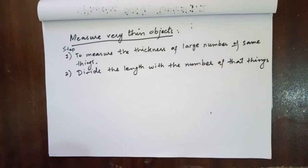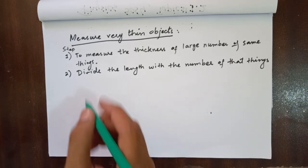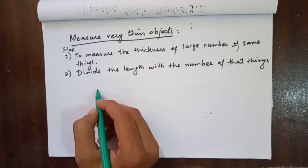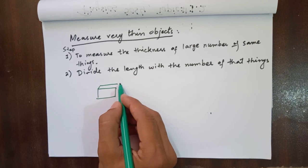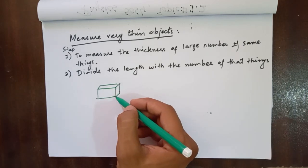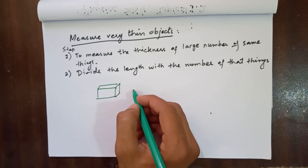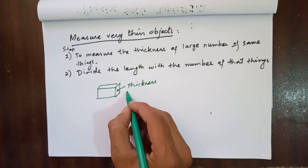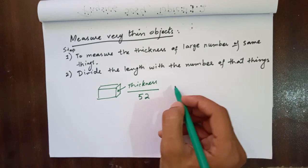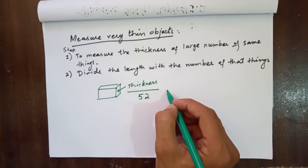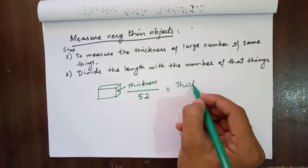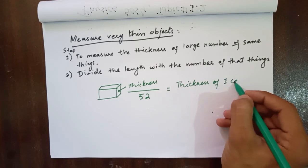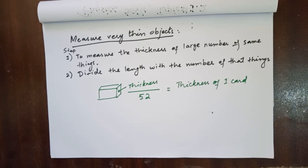For example, if we have to measure the thickness of one card from a pack of 52 cards, we will take the thickness of that whole packet by using a ruler. And then after finding out that thickness, we will divide it by the number of cards, that is 52. So that we will get the thickness of one card.